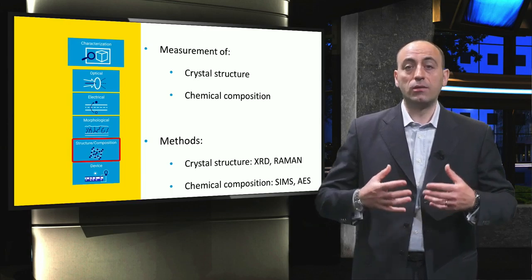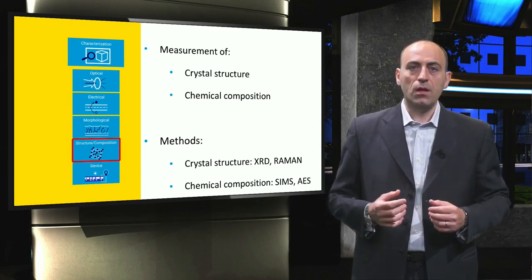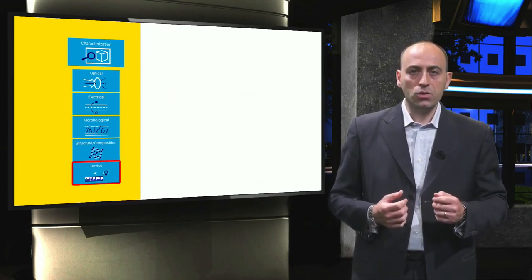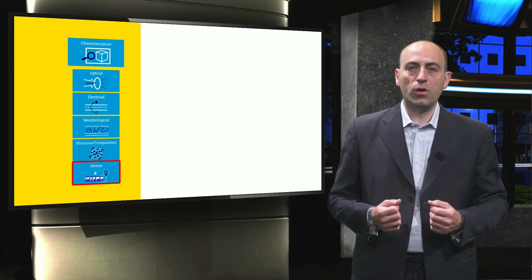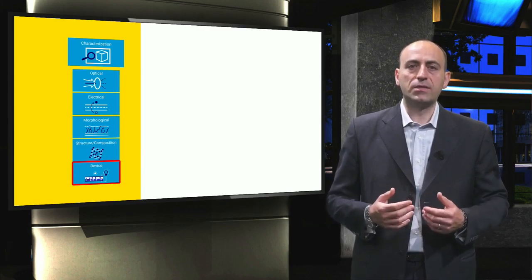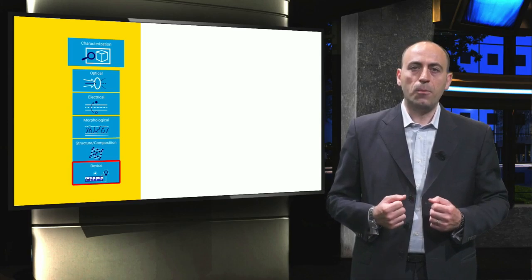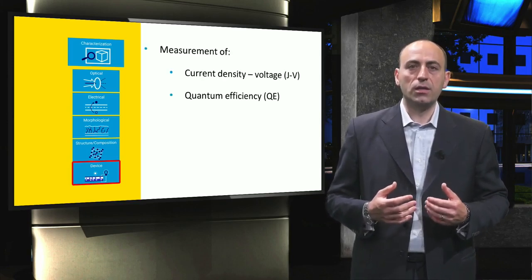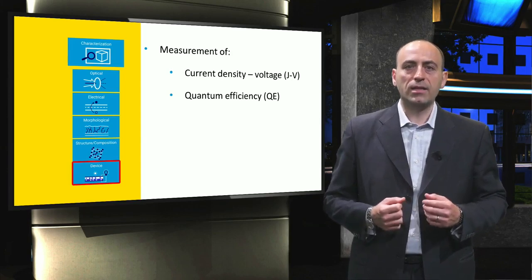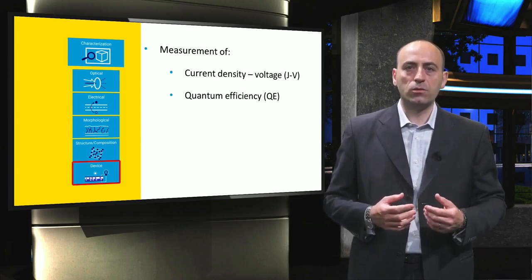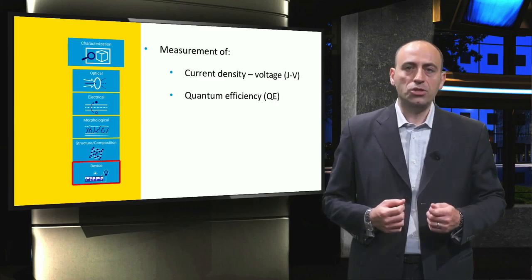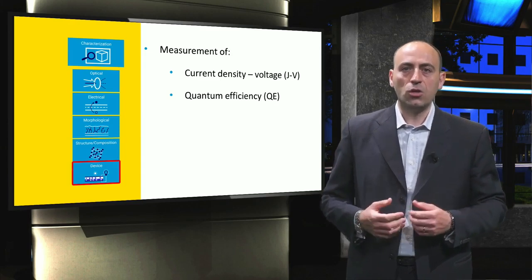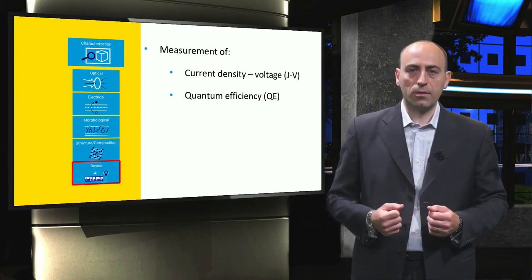Finally, we will talk about the characterization of PV devices. These measurements determine the external performance of a device. This is useful to evaluate the quality of simulations in the process known as calibration of modeling platform. The performance is determined as function of the electrical potential in so-called current density voltage measurements and as a function of spectrum in quantum efficiency measurements. JV measurements can be conducted in the dark and under illumination to understand a solar cell electronic behavior.